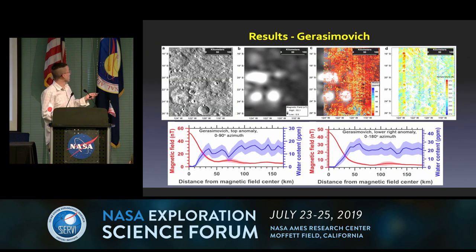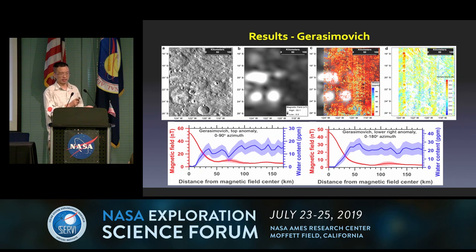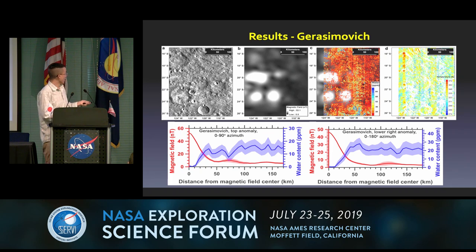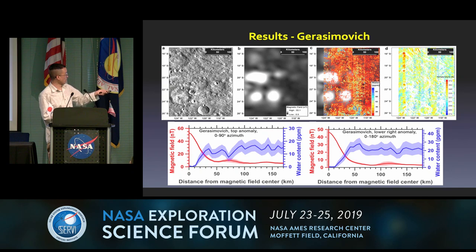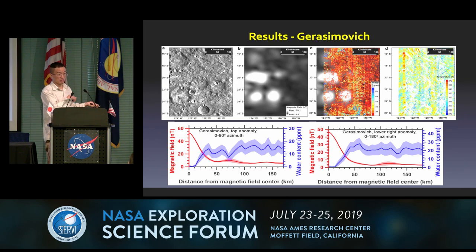Here is Gerasimovich, which is interesting because although it shows a very strong magnetic field — even higher than Reiner Gamma — you don't see very well developed swirl patterns. There are three strong field regions here. Here is the water map overlaid on the magnetic map, with some missing data. We examined two anomalies; for one we average from zero to 90 degrees to avoid influence from the others, and for the other we do 180-degree azimuthal averaging. Similar story to Airy and Reiner Gamma — strong magnetic anomaly, almost no water, and water content increases as you move out of the magnetic anomaly.